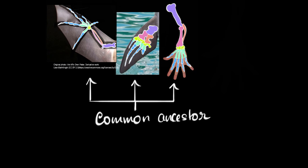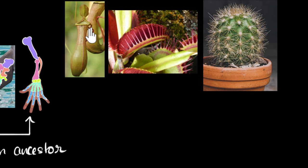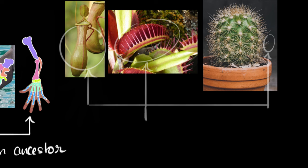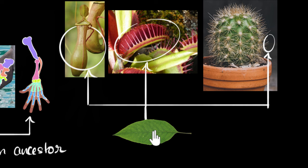Let me give you an extreme example in plants of the same thing. If you look at these three plants — this is a pitcher plant, which contains the pitcher. If insects fall into it, it will close the lid, not allow them to escape, and start digesting them. This is a Venus flytrap — like a mouth-like thing. If a fly comes in, it closes the mouth and starts digesting it. And this is a cactus, which has a lot of spines, or thorn-like structures. Now if you do careful research on these structures, we can see that the pitcher of the pitcher plant, the mouth of the Venus flytrap, and the spines are all actually highly modified leaves. It's hard to believe how a leaf can modify into these different things, but it turns out to be true.